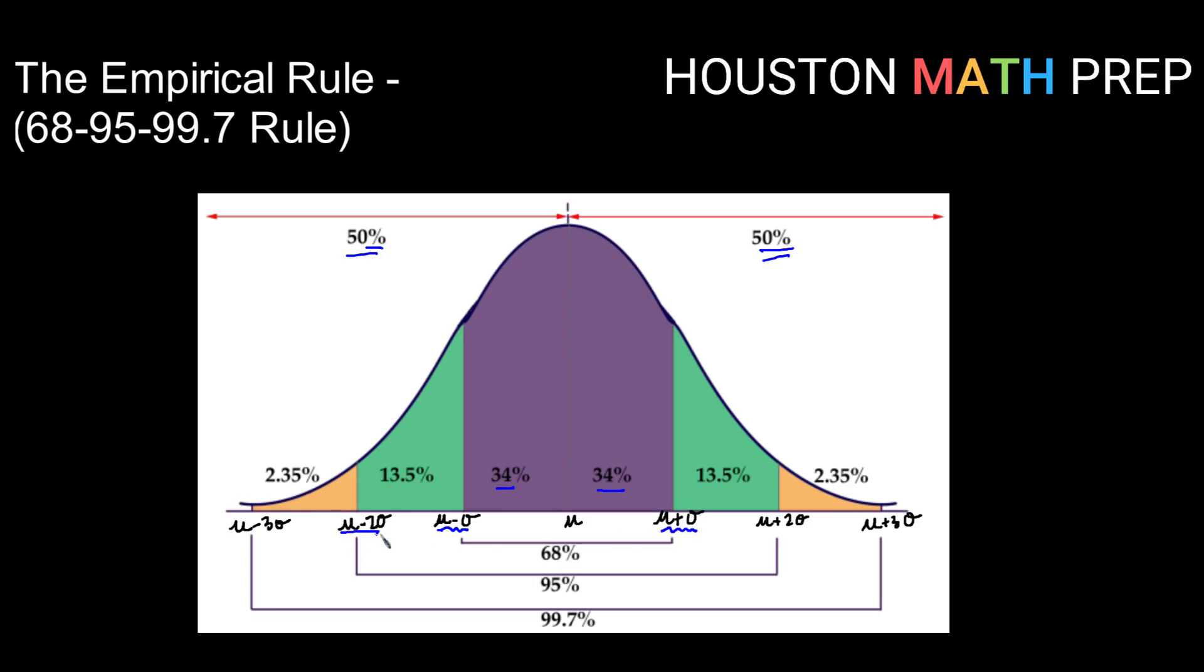From two standard deviations below to two standard deviations above, we will find that 95% of our data lies there. And then from three standard deviations above to three standard deviations below, 99.7% of our data falls there. 99.7% is a really high value, so that tells us that almost all of our data values should fall between three standard deviations above and three standard deviations below the mean, according to the empirical rule.